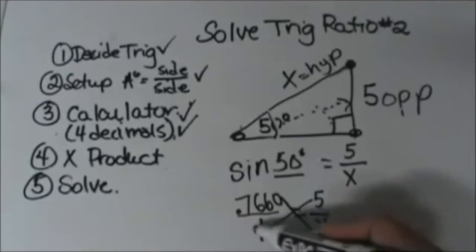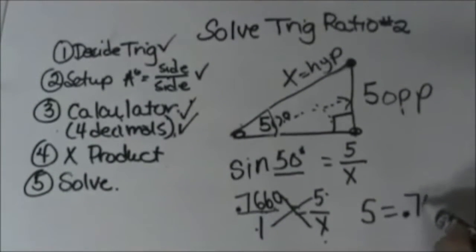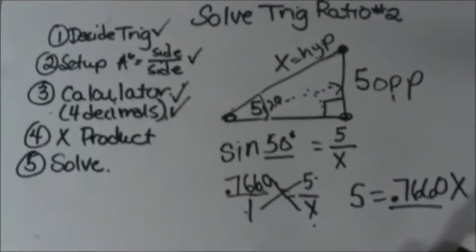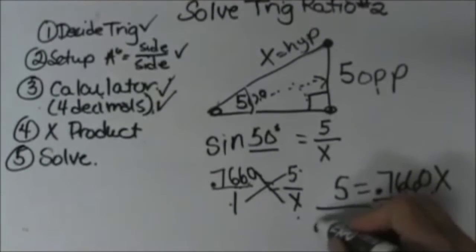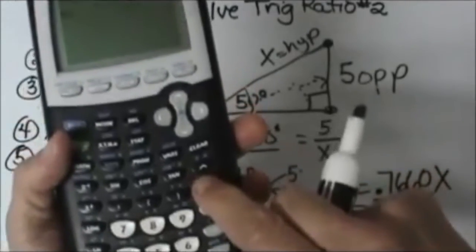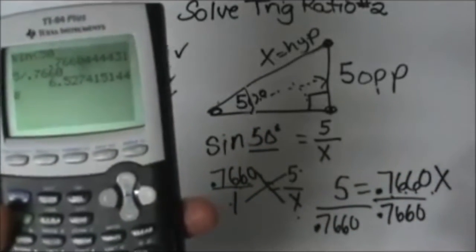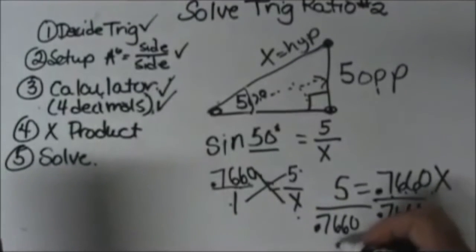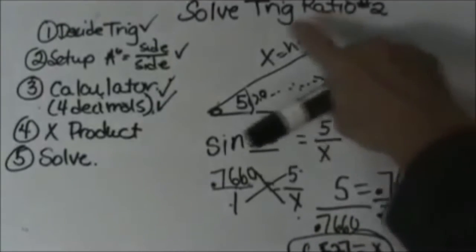Let's just cross multiply. 5 times 1 is 5, and 0.7660 times x is 0.7660x. So that decimal is now my coefficient. To solve it and to get the x by itself, I have to divide by 0.7660, and this is where it gets a little tricky, so just treat that as a coefficient and let's divide 5 by that decimal. So 5 divided by 0.7660, let's see what we get. I'm getting 6.527, so that means the side is 6.527 and that is how long my hypotenuse is.